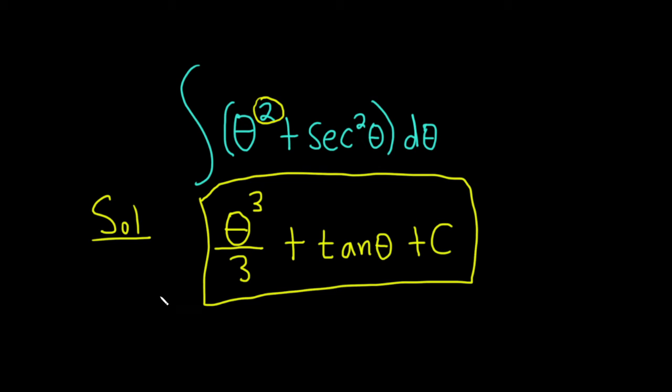We should check our work by differentiating. To differentiate this, the 3 stays on the bottom since it's a constant. You bring down the 3, giving 3 theta, then subtract 1 from the exponent. That gives 2, and it's all over 3.